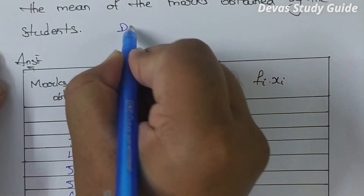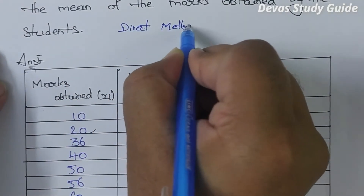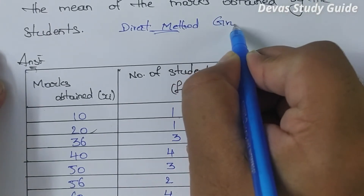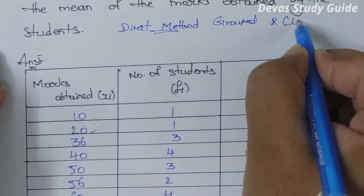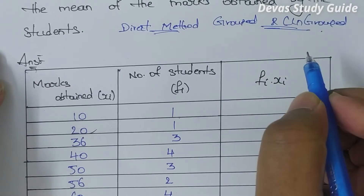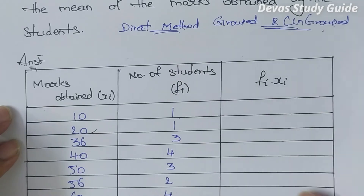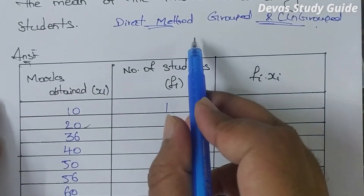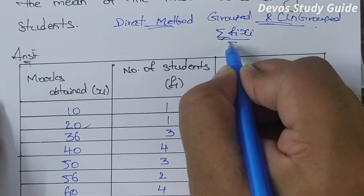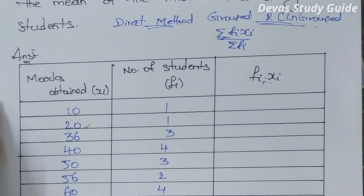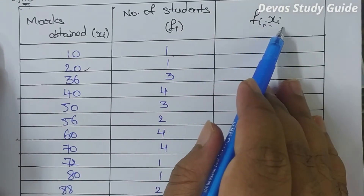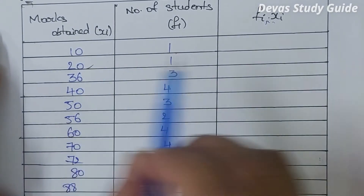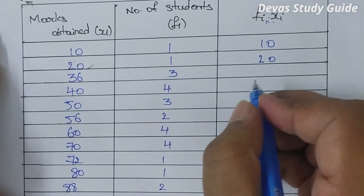For ungrouped and grouped data we use the formula: mean x̄ = Σfixi divided by Σfi. Here fi represents the frequency (number of students) and xi represents the marks. We multiply each xi by its corresponding fi to get the fixi values.